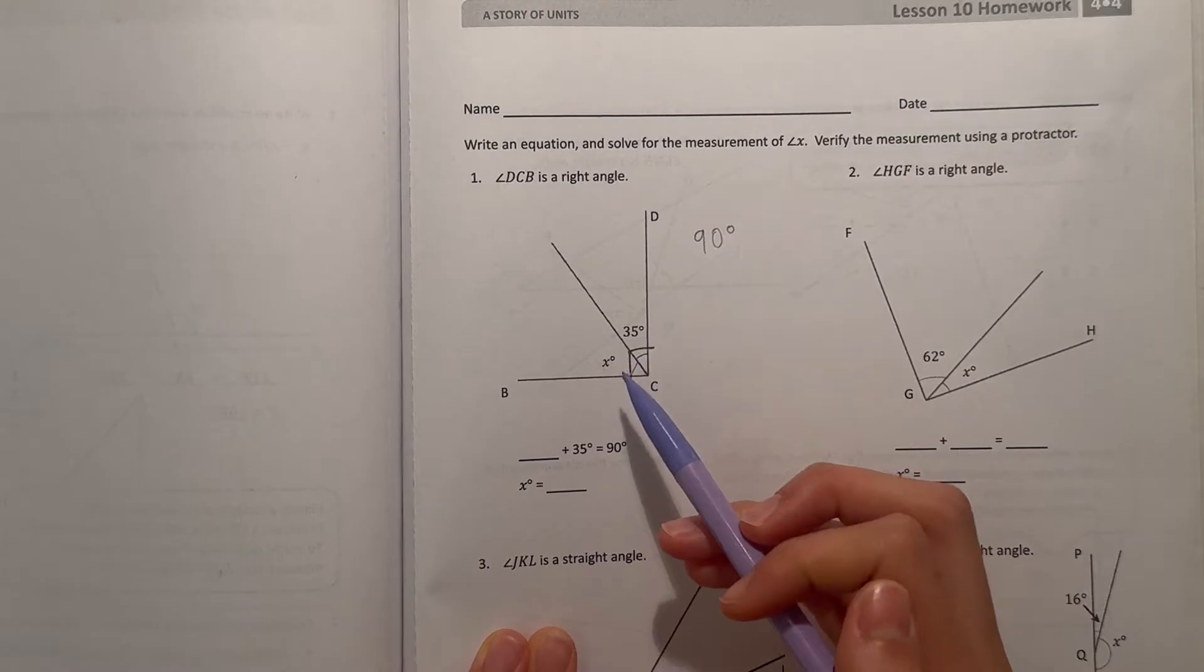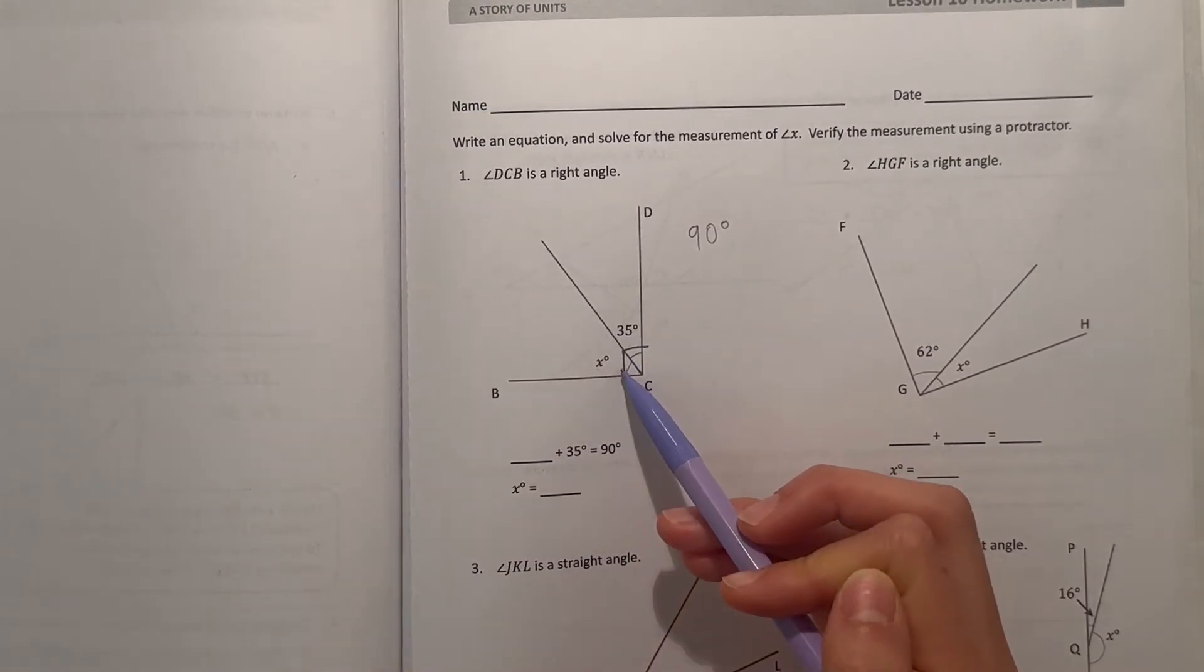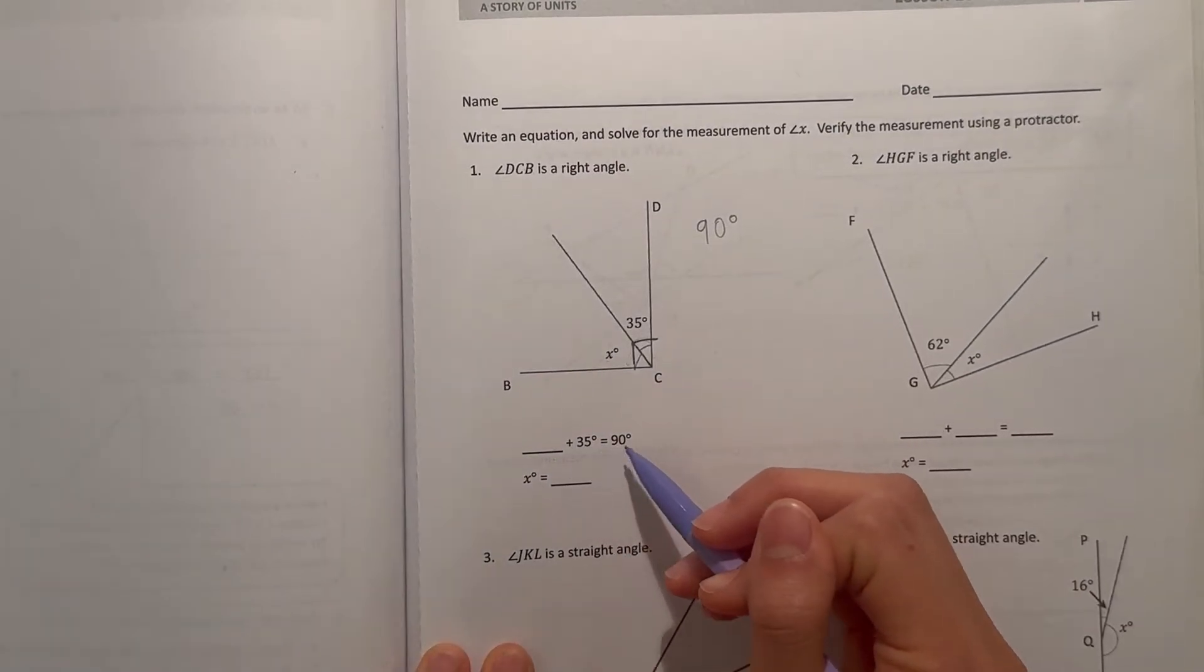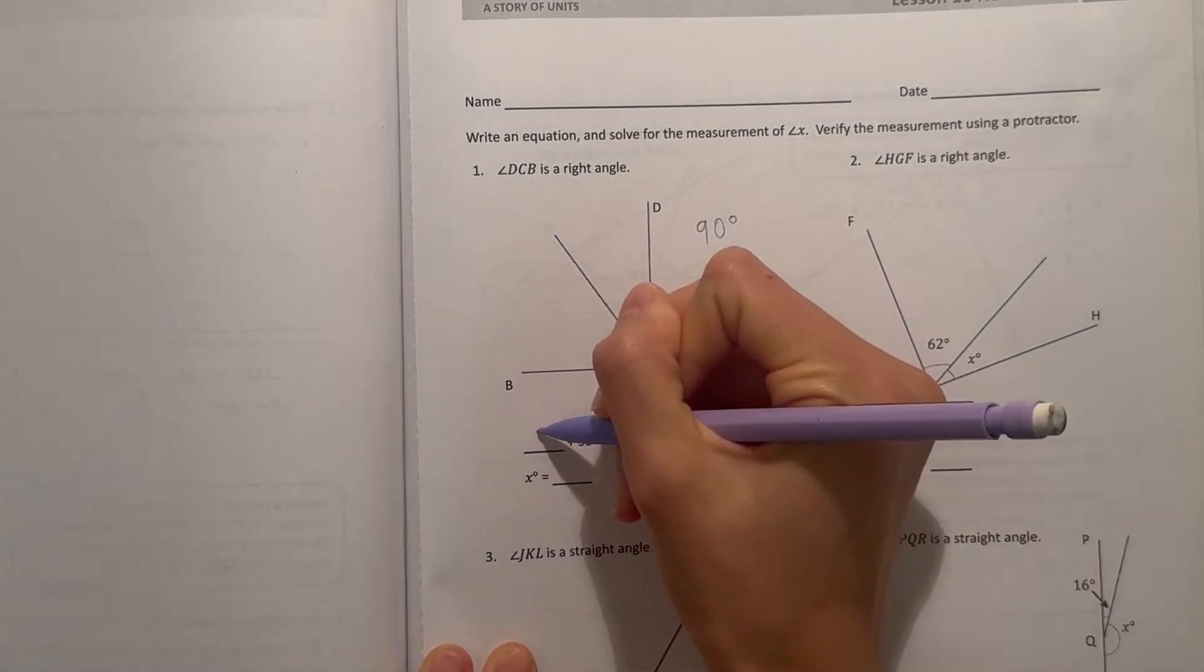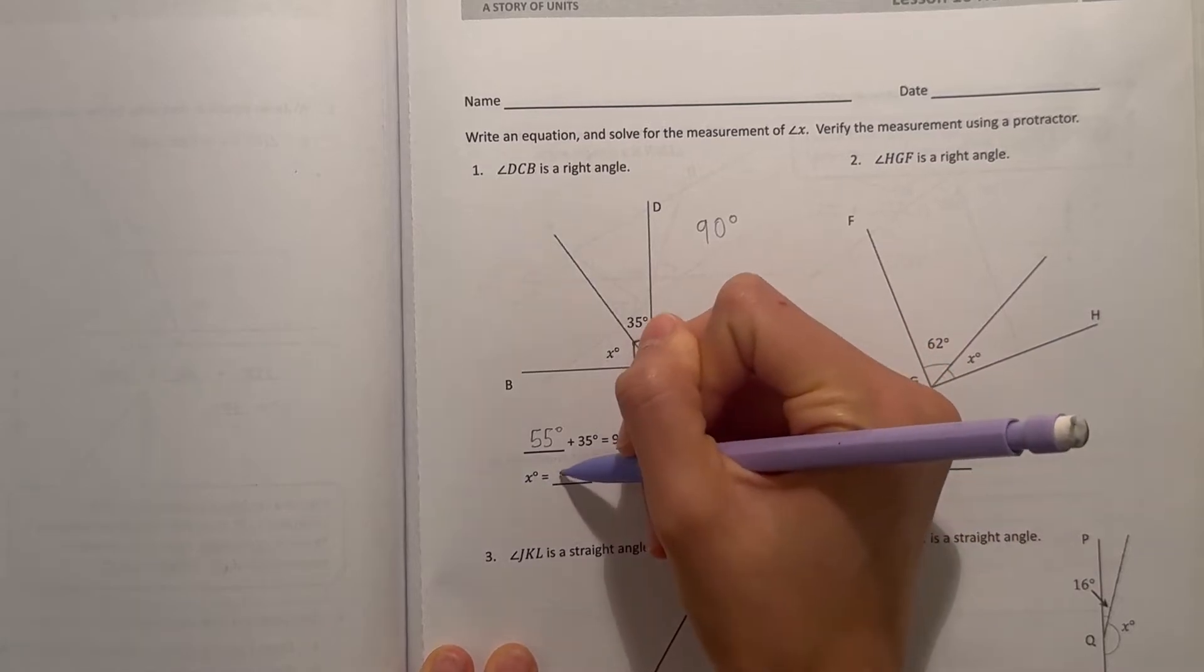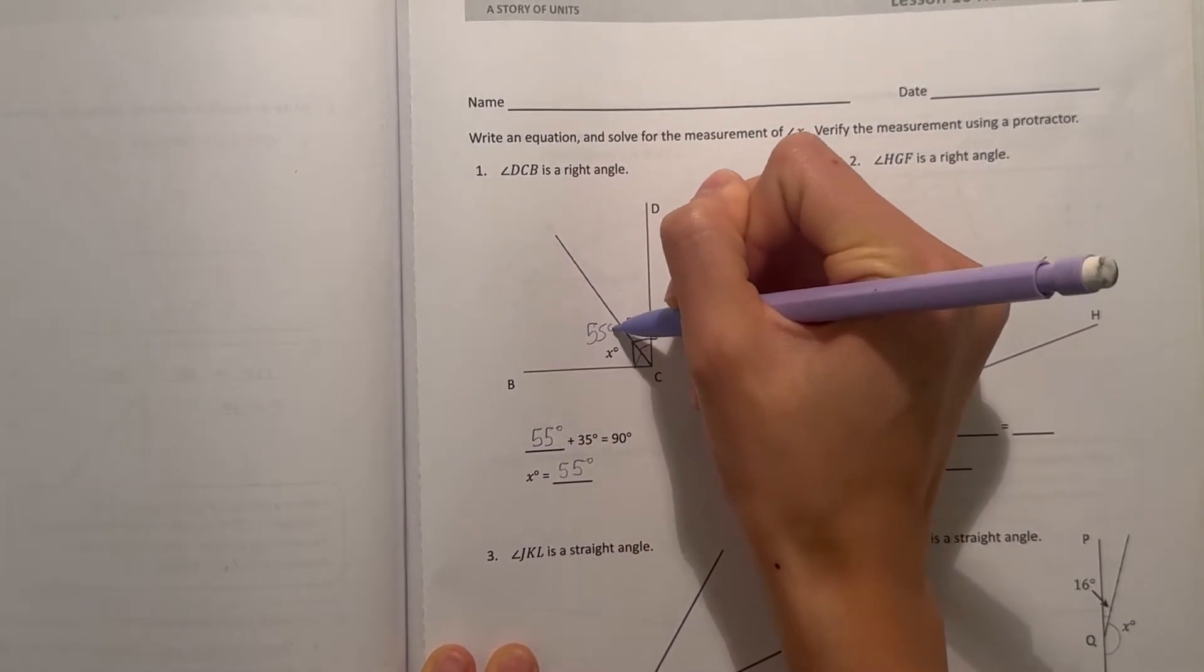So whatever x is, when it's added to 35 the sum needs to be 90 degrees because this is a right angle. So what plus 35 is 90? Well, 90 minus 35 is 55. So 55 plus 35 is 90. So x equals 55 degrees.